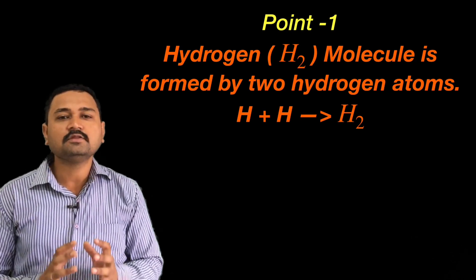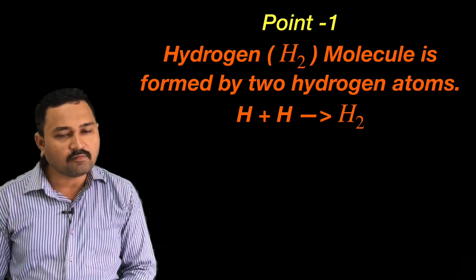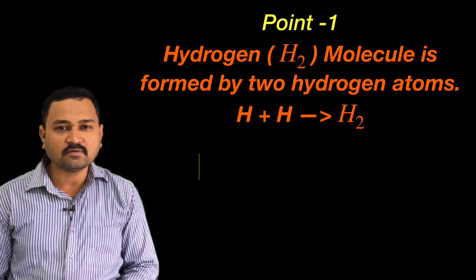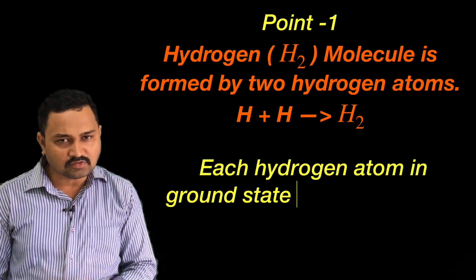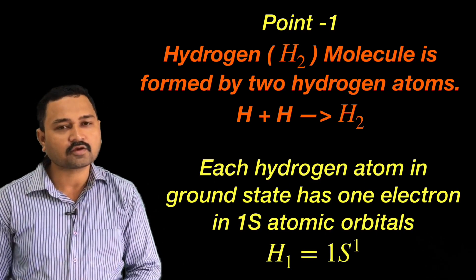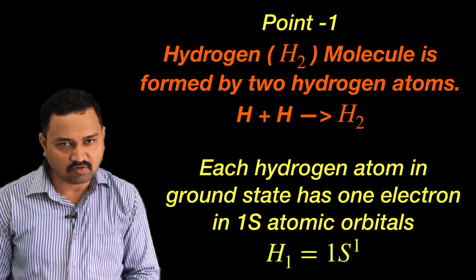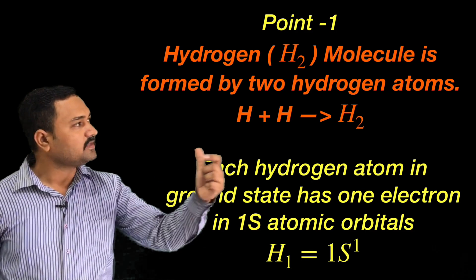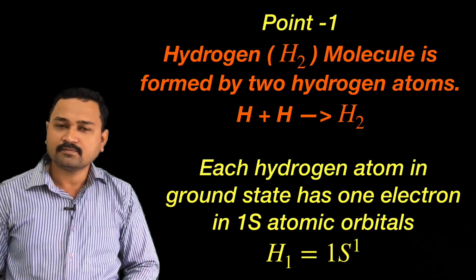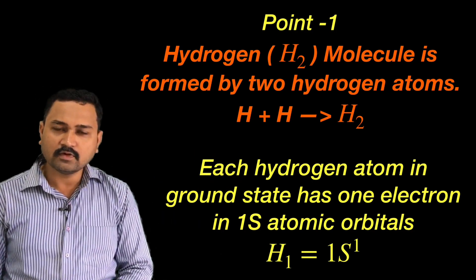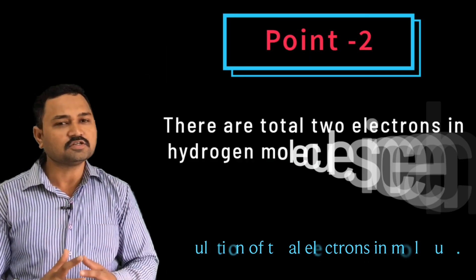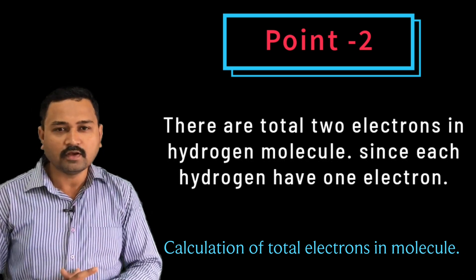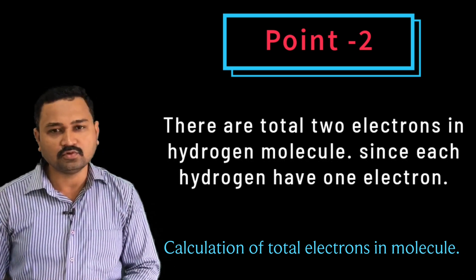We know that the hydrogen molecule is formed by two hydrogen atoms, and each hydrogen atom in the ground state has only one electron in its 1s atomic orbital. So that will be our point number first. Again, we know that each hydrogen atom contains one electron, hence the hydrogen molecule will have two electrons.